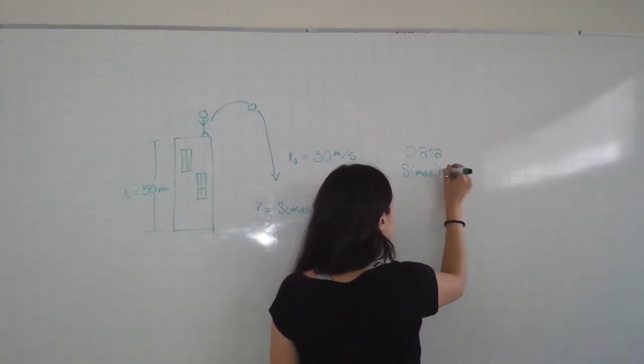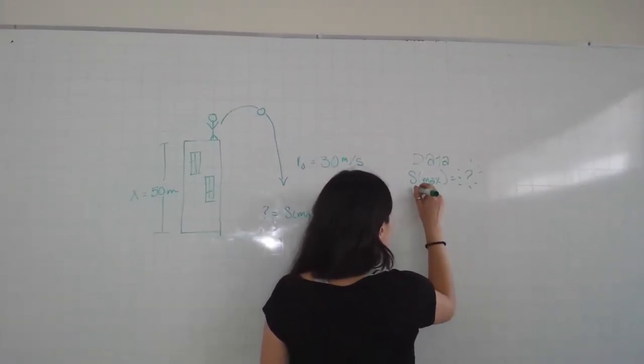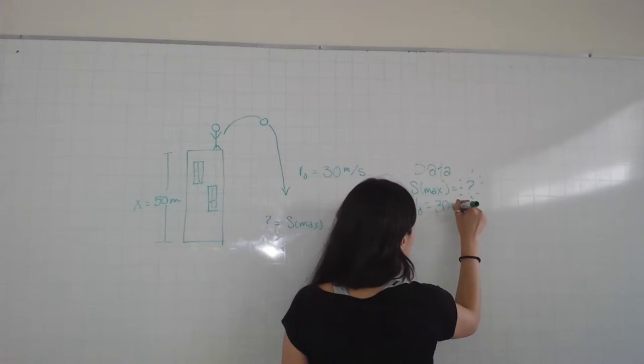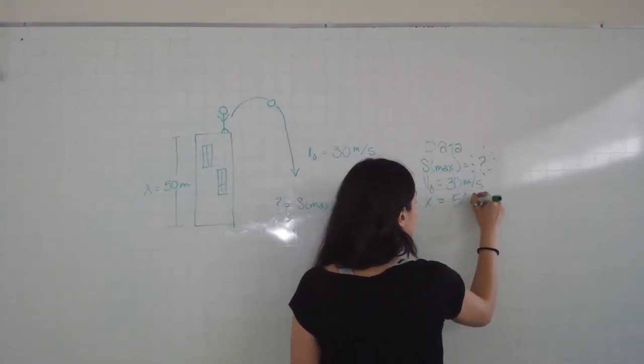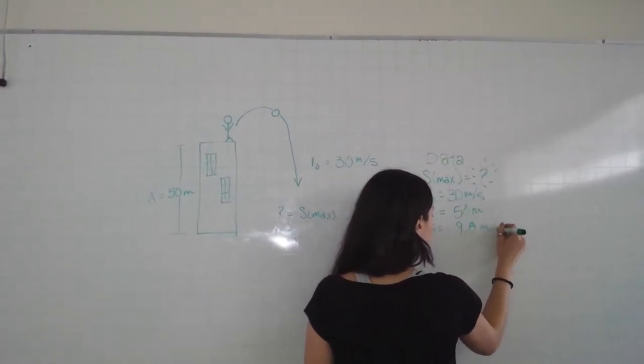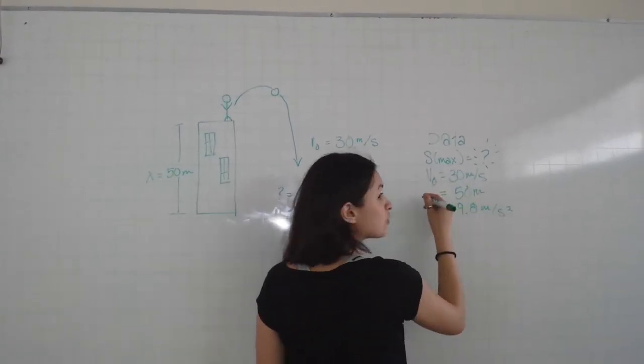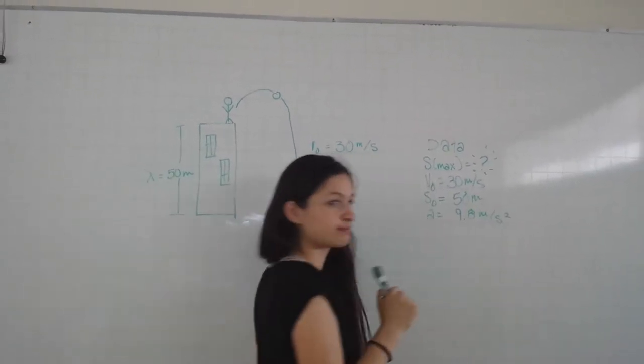So we know that we have to find the highest point. For that we have the initial velocity that is 30 meters per second, our total height of 50 meters, and our acceleration that is minus 9.8 meters per second squared. Don't forget the minus.